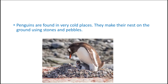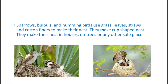Penguins are found in very cold places and they make their nest on the ground using stones and pebbles. See the little penguins with the mother penguin — they are so cute! Sparrows, bulbuls, and hummingbirds use grass, leaves, straws, and cotton fibers to make cup-shaped nests. They make their nests in houses, on trees, or any other safe places — sometimes you can even see their nests inside your room upon the windows.